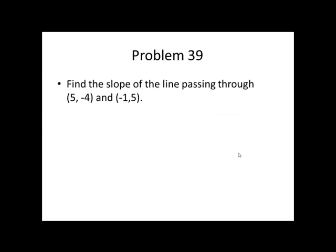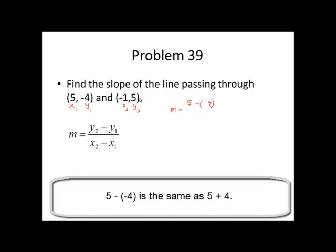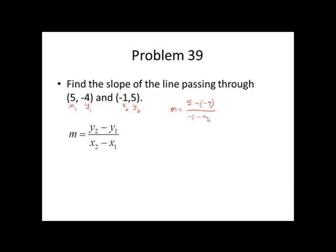To find the slope of a line passing through two points, we're going to use the slope formula shown on the screen. It's a good idea to label your points, your values. Here's the first x, x1, the first y-coordinate, y1, the second x-coordinate, and the second y-coordinate. So we can substitute into this formula. y2 minus y1 is going to be 5 minus negative 4. Then we move on to the denominator, x2 minus x1. That's going to be negative 1 minus 5.